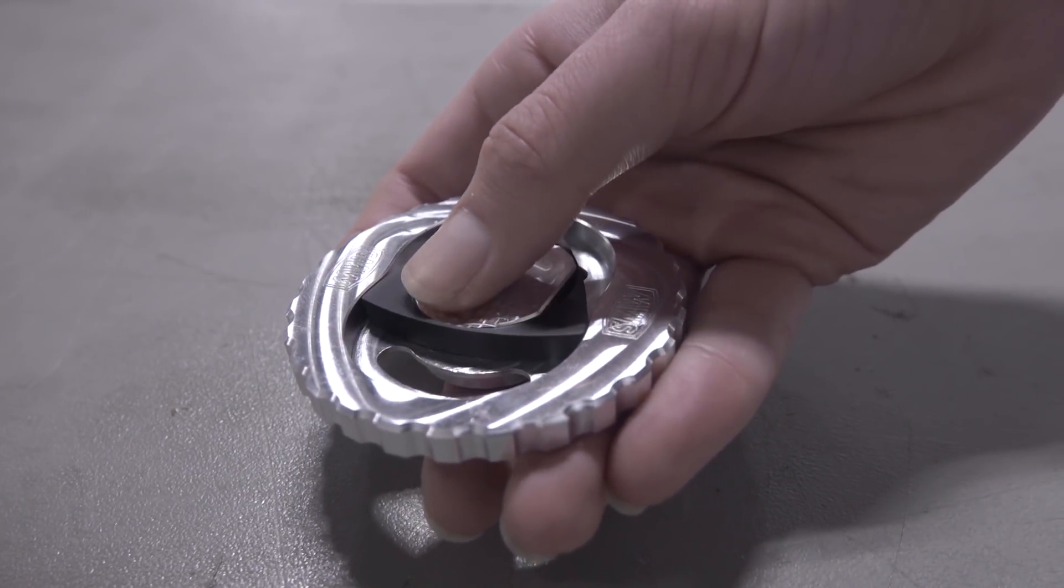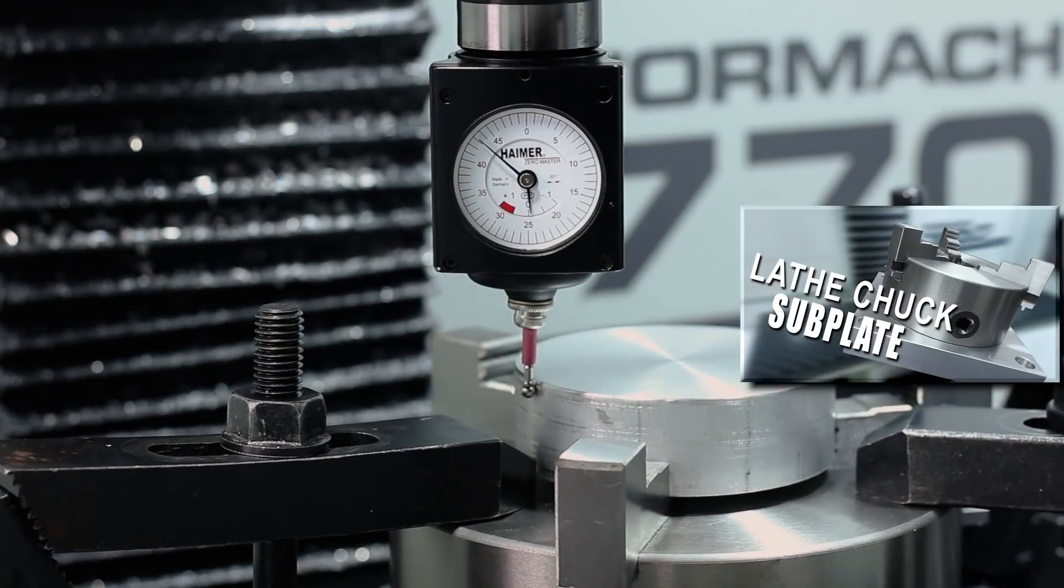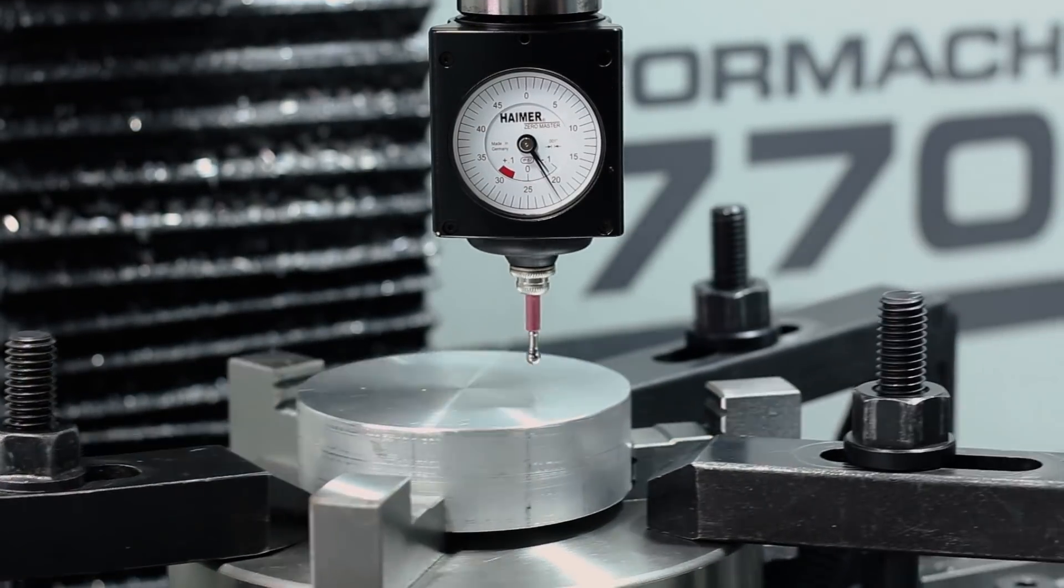We're using a piece of aluminum round bar as stock for our body, and card here to our video on the lathe chuck subplate, which completely eliminates the need for these strap clamps.